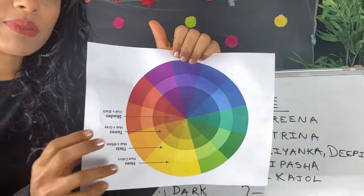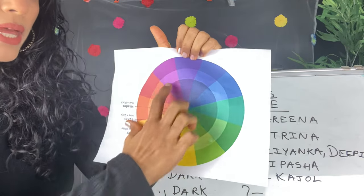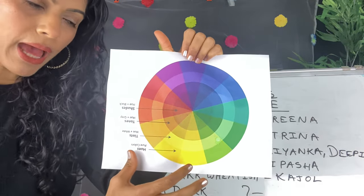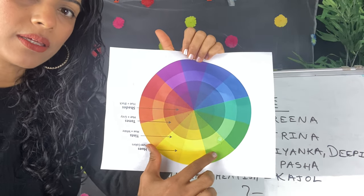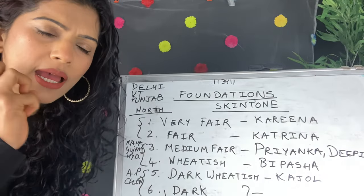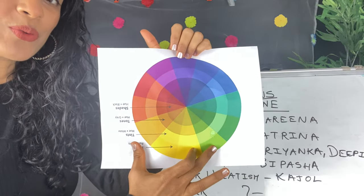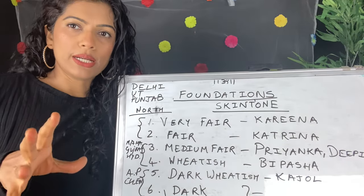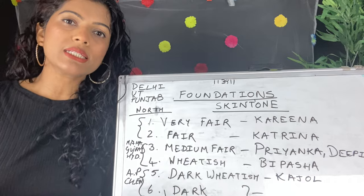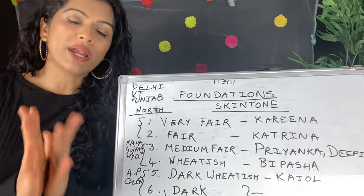I hope those two images helped you identify your undertone. Now if you see this color wheel, if you draw a line here, all this spectrum is warm and all this is cool. Till here it is yellow, but some people are a little further — after yellow is green, so yellow and green mixed makes olive undertone. In my case I have a little bit of greenish tinge also, so I am yellowish-greenish. With experience and knowledge you will understand all these concepts — don't worry, watch this video multiple times and you will understand.